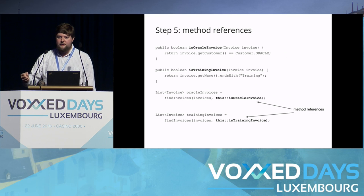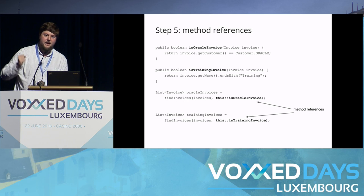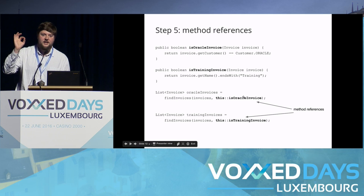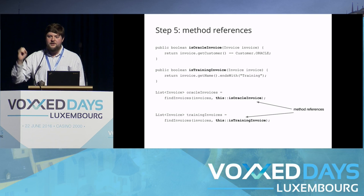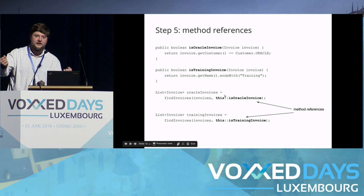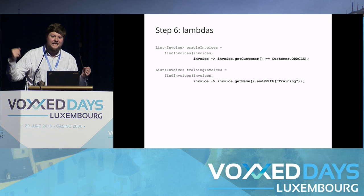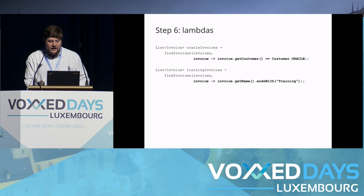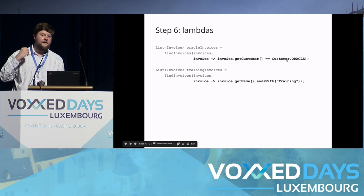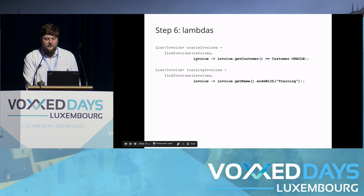One of the features Java 8 introduces to help solve this problem is method references. A method reference is a way of saying: take this method and that interface with a single abstract method, and use this method as the implementation for the method on that functional interface. So we have isOracleInvoice or isTrainingInvoice — methods we can just pass in as method references. Another feature in Java 8 is lambda expressions, which let us write an implementation of a functional interface inline. We take the invoice, get the customer, check if it's Oracle, or check if the name ends with training.